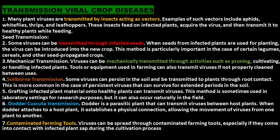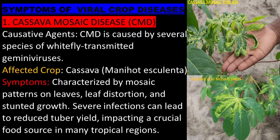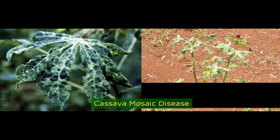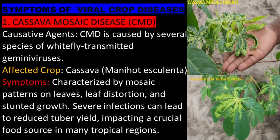Cassava Mosaic Disease (CMD) is caused by several species of whitefly-transmitted gemini viruses. The affected crop is cassava. It is characterized by mosaic patterns on leaves, leaf distortion, and stunted growth. Severe infections can lead to reduced tuber yield, impacting a crucial food source in many tropical regions.